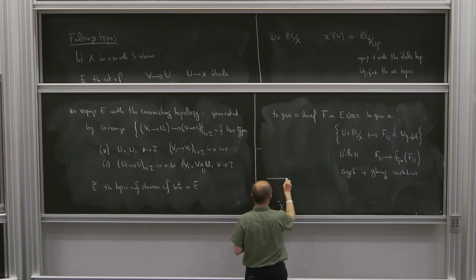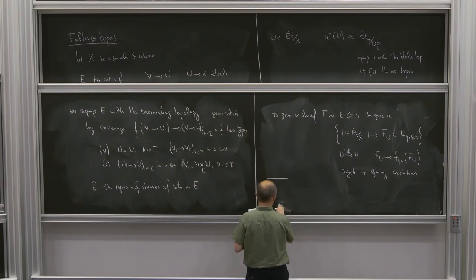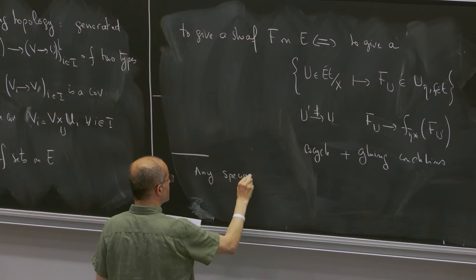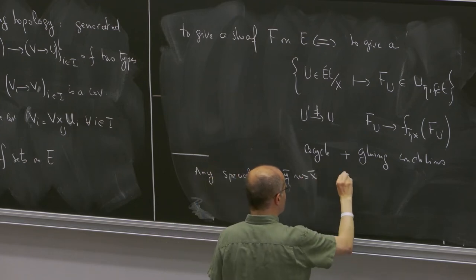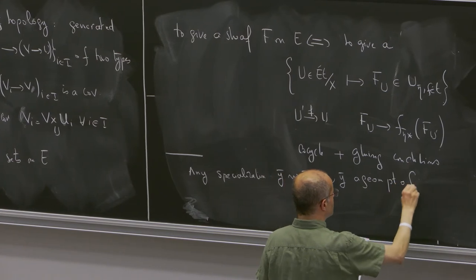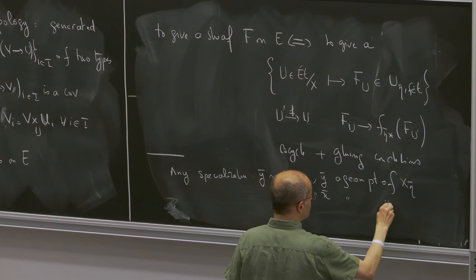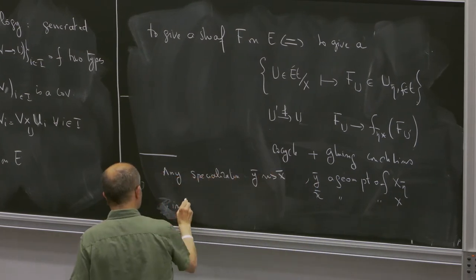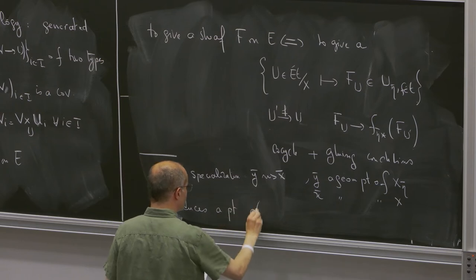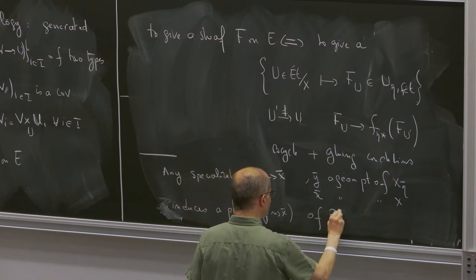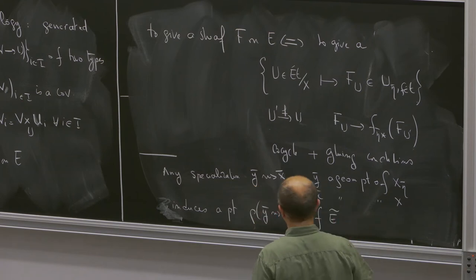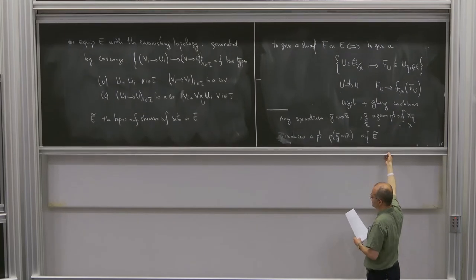An important property of this topos is that it is coherent and has enough points. In fact, any specialization y-bar -> x-bar from a geometric point of X_{eta-bar} to a geometric point of X induces a point rho(y-bar -> x-bar) of E-tilde. The collection of these points is conservative, so we can really work with them.